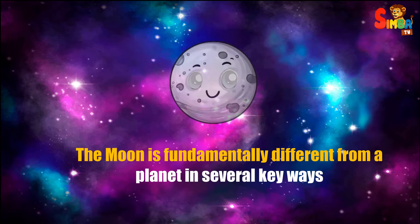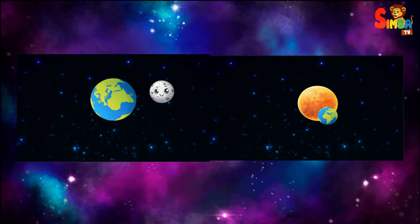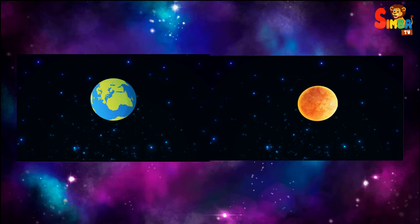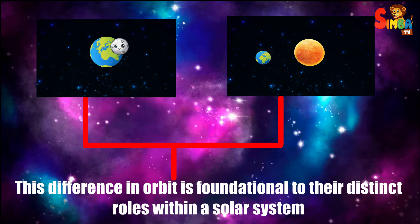The moon is fundamentally different from a planet in several key ways. Firstly, the moon orbits a planet while a planet orbits a star. This difference in orbit is foundational to their distinct roles within a solar system.